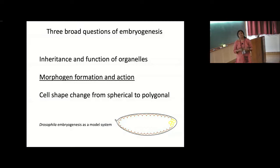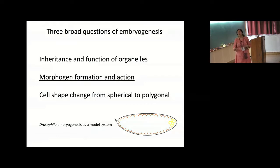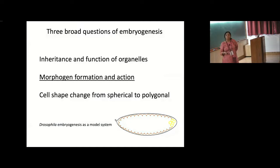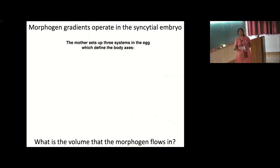The first 13 division cycles are all symmetric and synchronous. There is no asymmetric cycle. Even the posterior pole cells also have a certain synchronous division cycle happening. The division is always symmetric for the first 13 cycles.